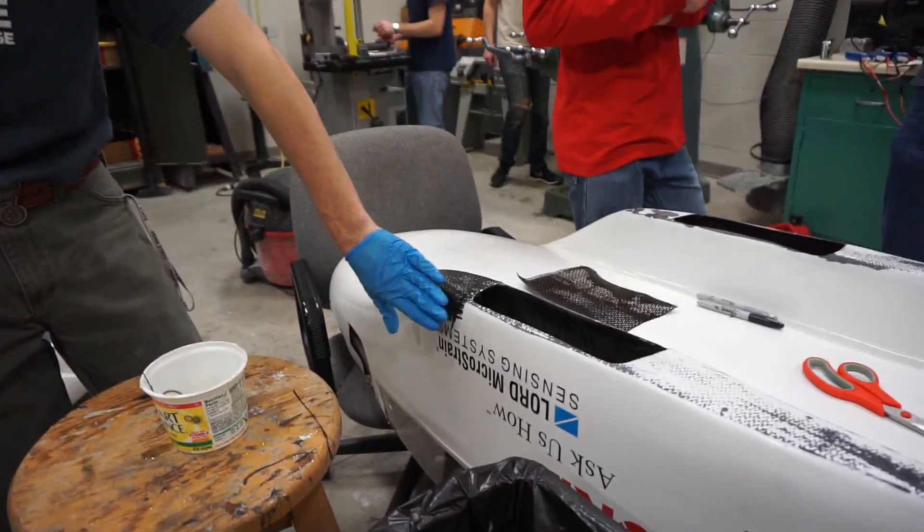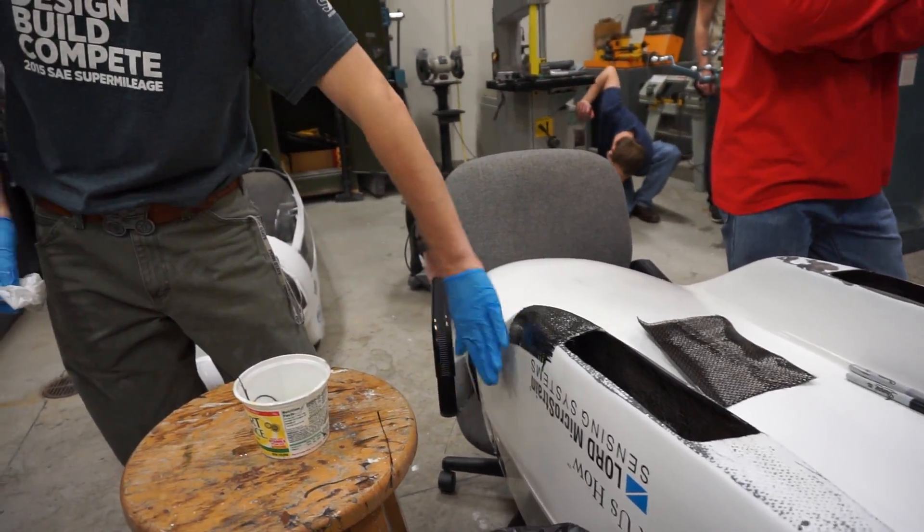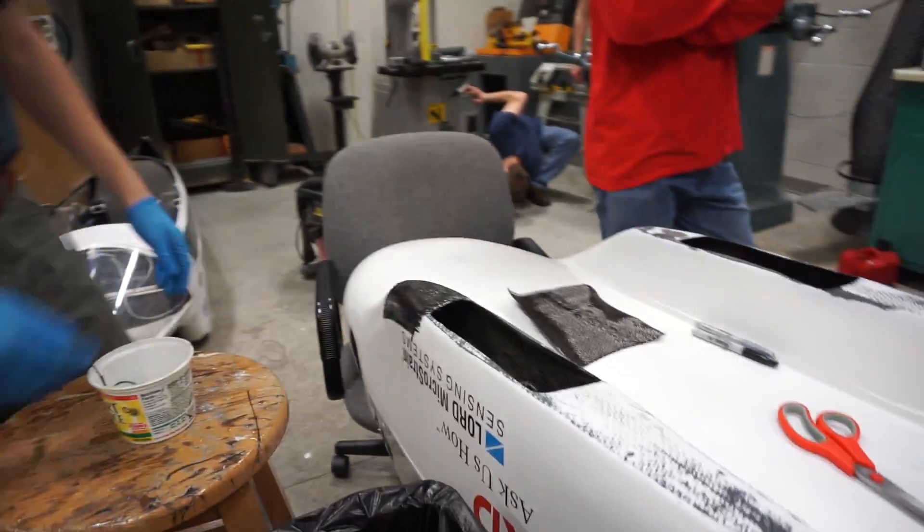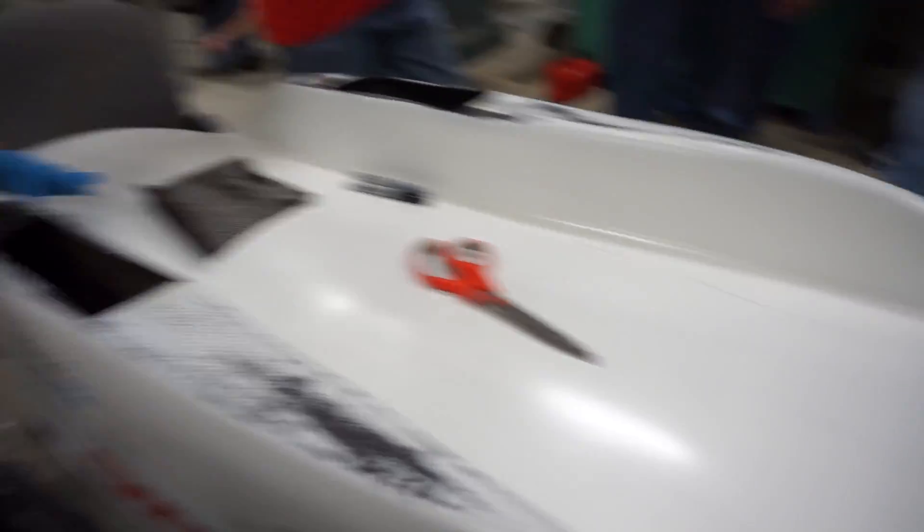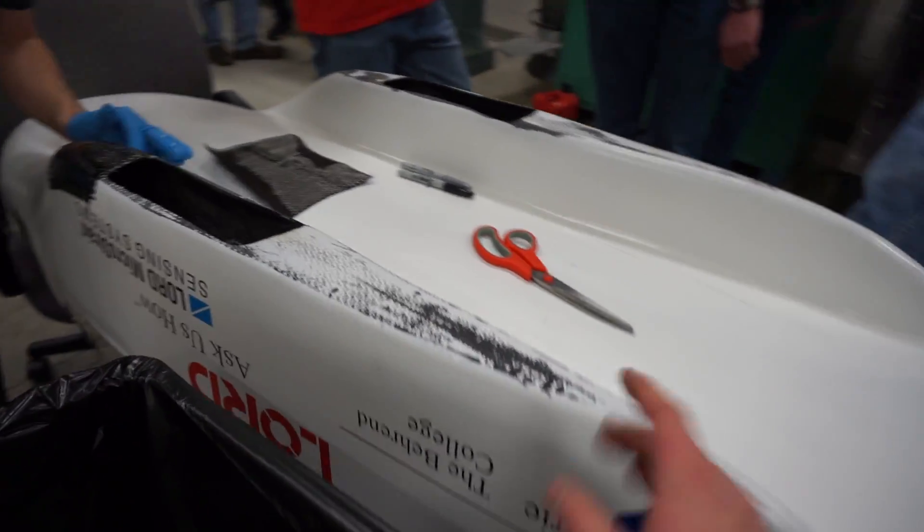And then after this dries, we'll sand it down, then we'll put a little bit of Bondo body filler on it to smooth it out and flare it in with the rest of the car. All right, cool.